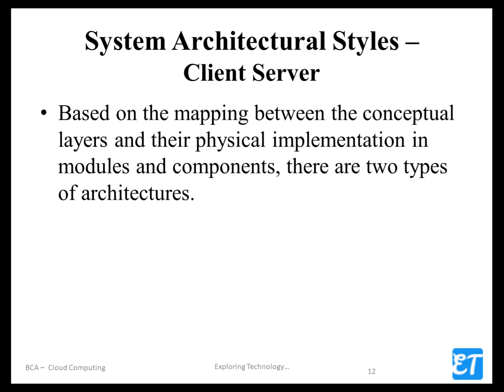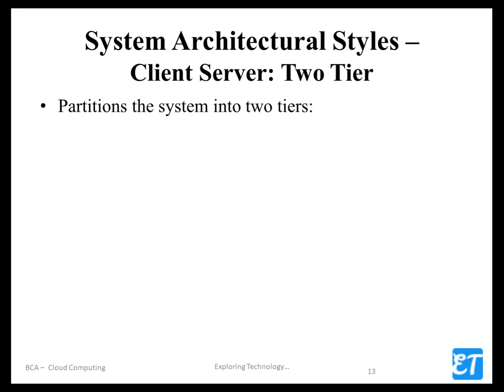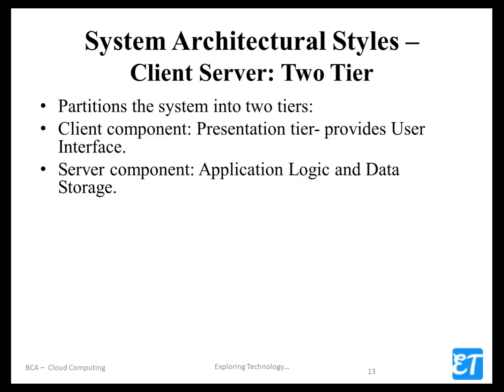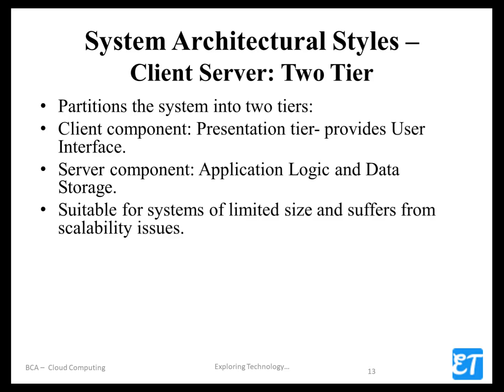Based on the mapping between the conceptual layer and their physical implementation in modules and components, there are two types of architecture: two-tier and three-tier. In two-tier architecture, the client component handles the presentation tier — that is, the user interface — while the server component handles application logic and data storage. The two-tier system is designed to be a thin client but is limited in size.